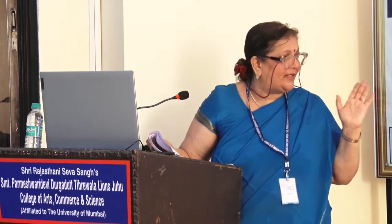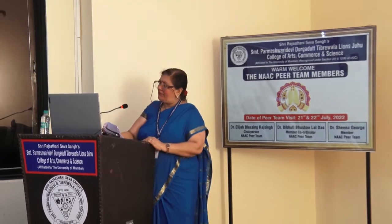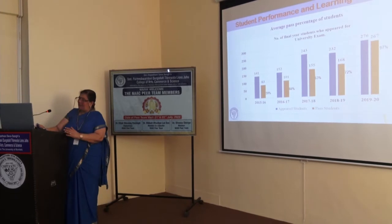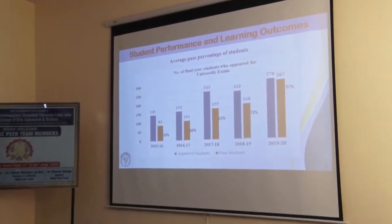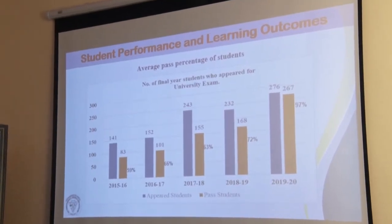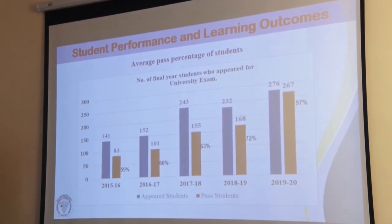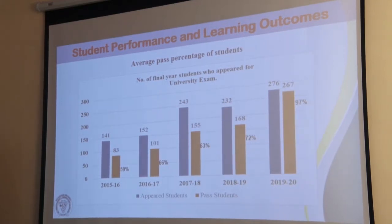We have displayed our results for the last five years. We have worked very hard to achieve good results, given that students are coming from very disadvantaged backgrounds, but we have put all our efforts to bring them to a level where they get a good position in society. Our pass percentages are: 2015–16: 59%, 2016–17: 66%, 2017–18: 63%, 2018–19: 72%, 2019–20: 97%.